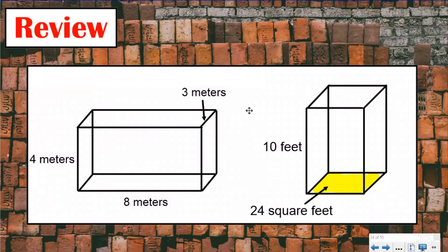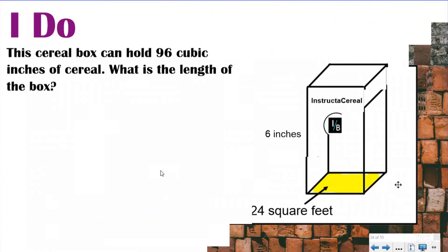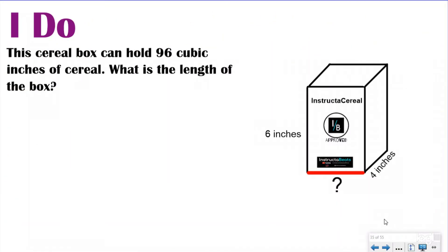These are the type of questions we did last lesson when we were finding the volume of rectangular prisms using the formula. They gave you all the information you needed to find the volume — the length, the width, and the height, or the area of the base and the height — and you could just plug those into your volume formula and solve. Today we're actually going to be going backwards. We're going to be giving you the volume and then you're going to be looking for one of these missing pieces.